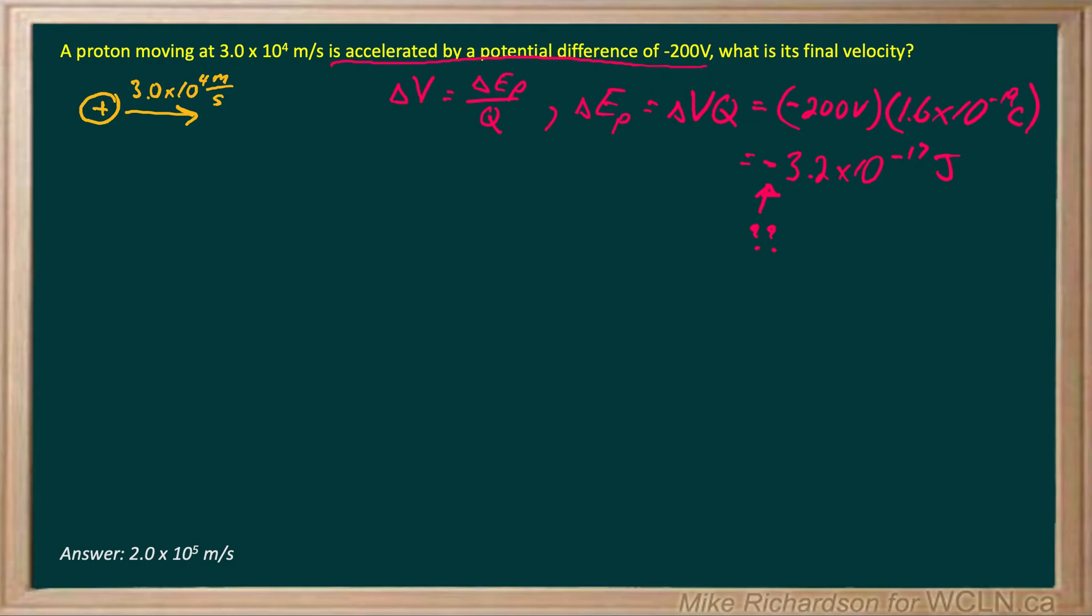And the way you can imagine it is as a set of parallel plates. Imagine my proton is initially moving to the right and it's got some kinetic energy. The question is, is it going to speed up or slow down? Well, if you imagine a series of parallel plates that it has to pass through, it goes through this little gap. And on the far plate is negative 200 volts and the initial one might be zero.